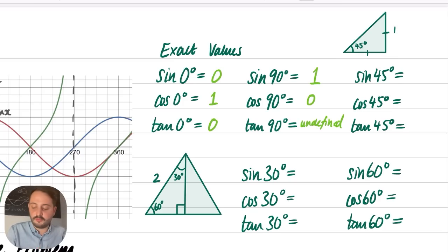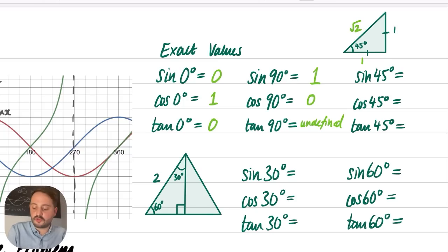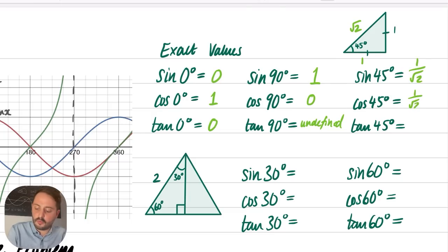For sin 45, cos 45, and tan 45, we use an isosceles right-angled triangle with both legs equal to 1. By Pythagoras, the hypotenuse is √2. So sin 45 = opposite/hypotenuse = 1/√2, and cos 45 = adjacent/hypotenuse = 1/√2 as well. Both sine and cosine of 45° equal 1/√2. Tan 45 = opposite/adjacent = 1.